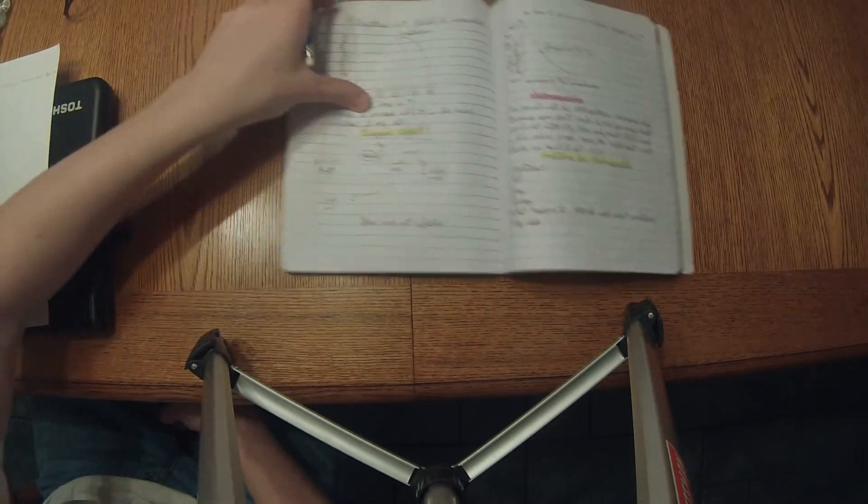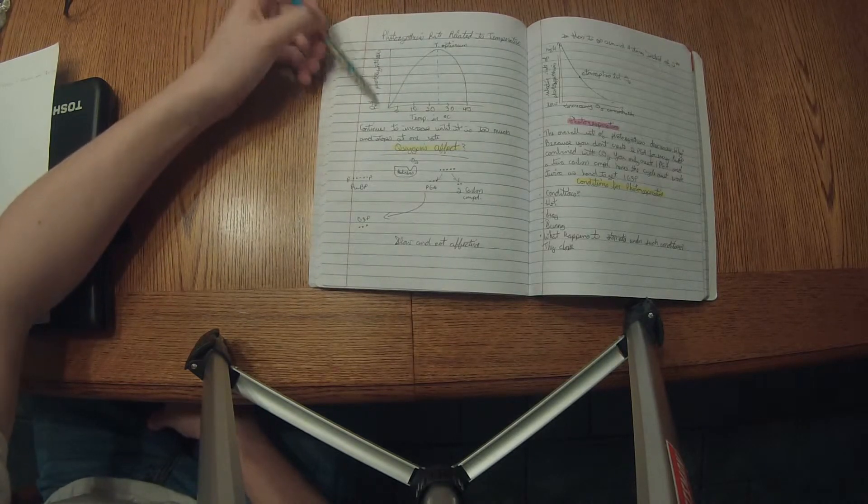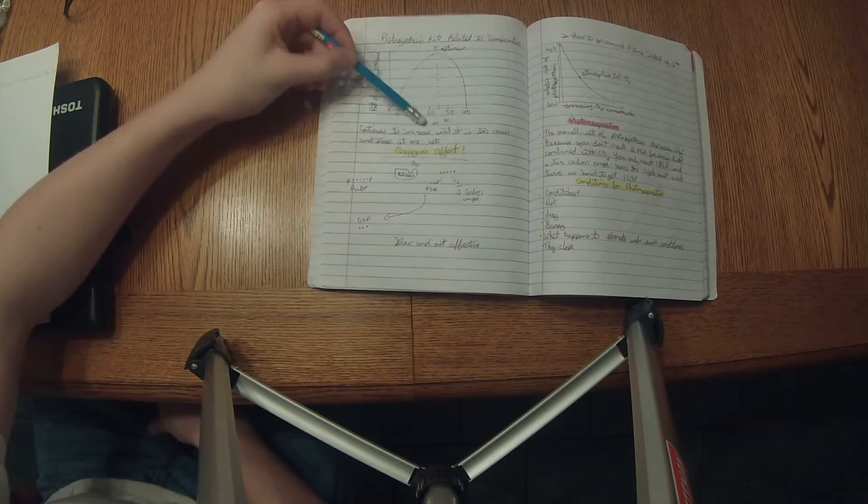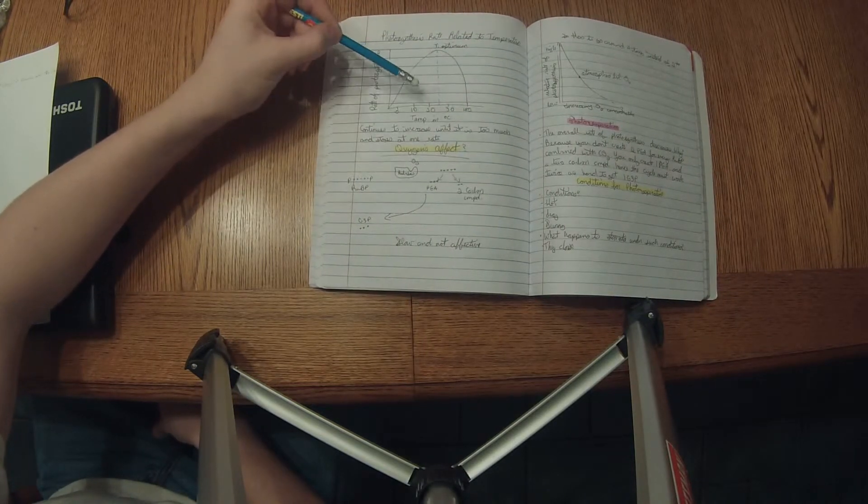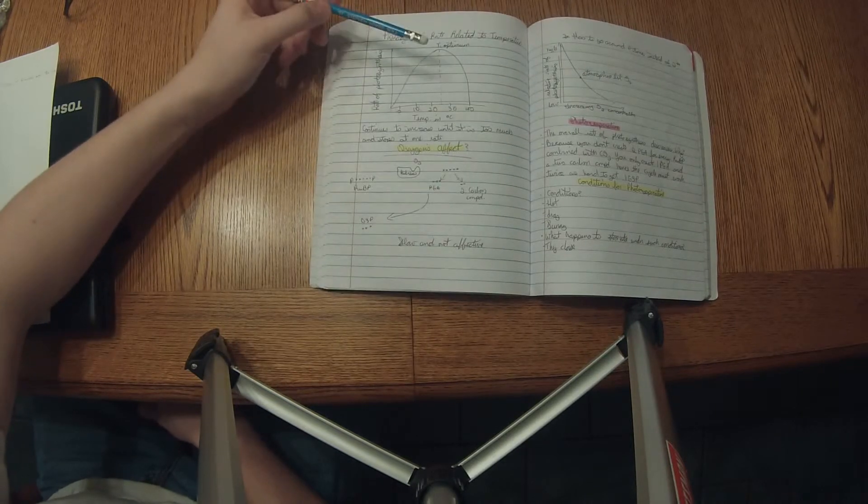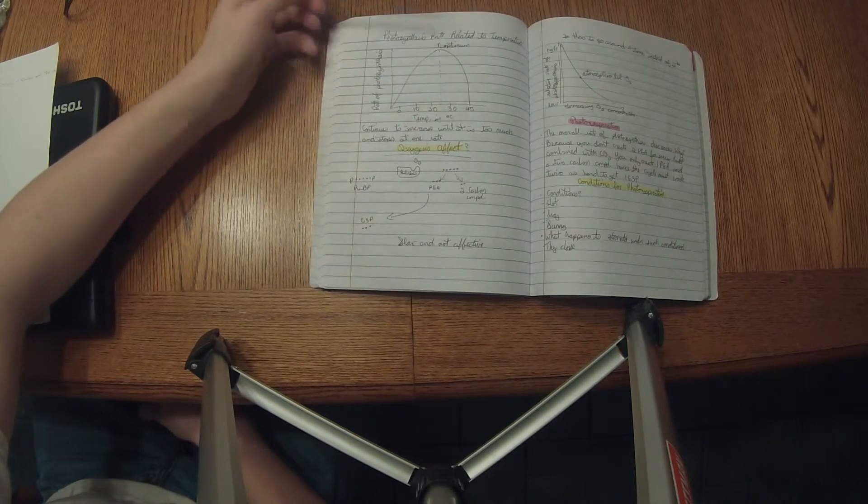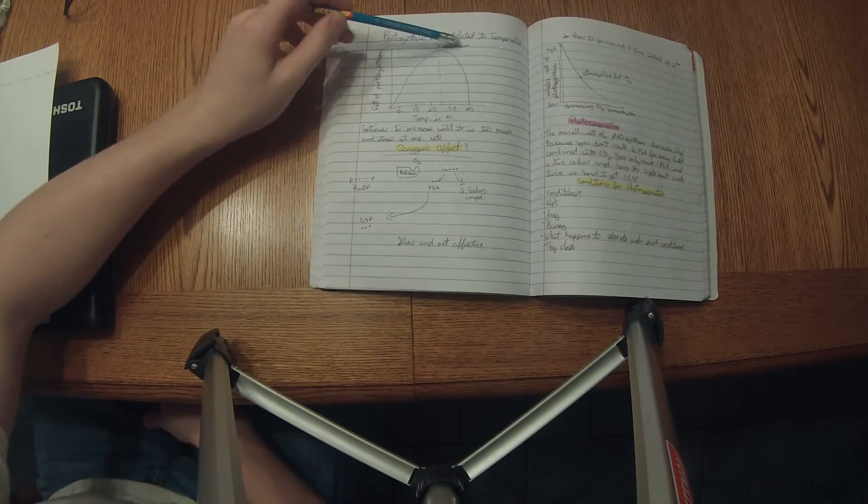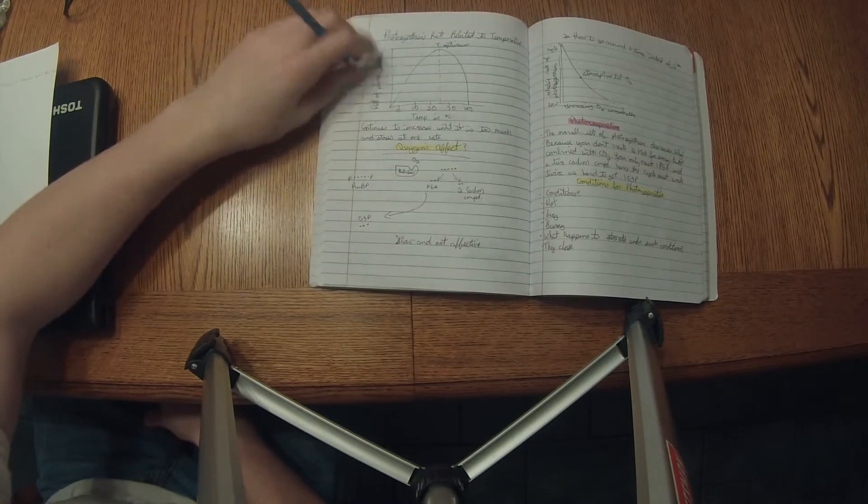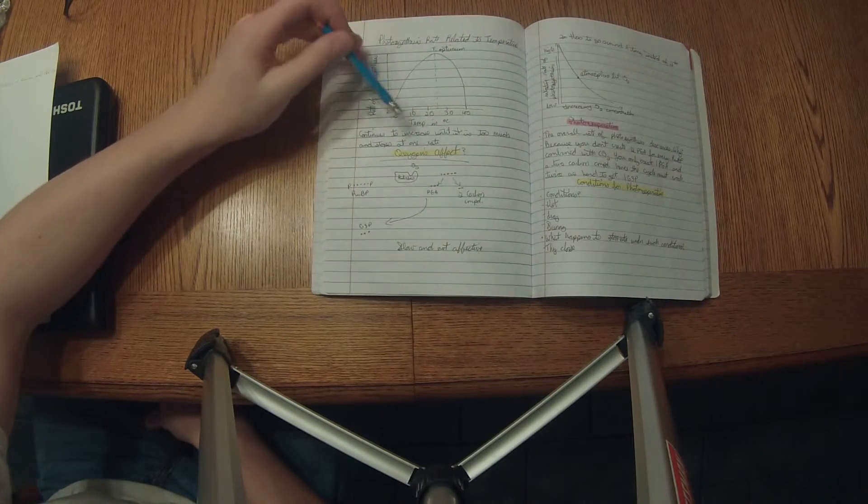The photosynthesis rate related to the temperatures. As here you can see on the right, same as the last graph, the rate, and then on the bottom or the x-axis the temperature in Celsius. From 0 to 40 it hits its peak at 25 and then drops to 40, a little over 40. And it continues to increase until it is too much and stops at one rate.